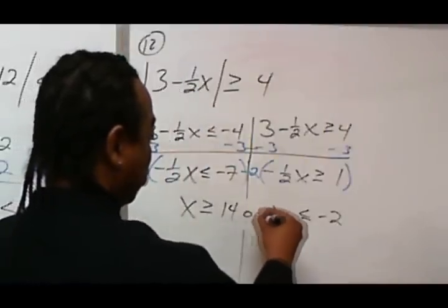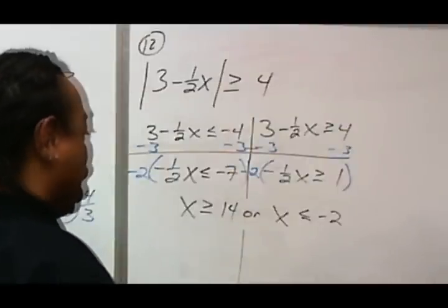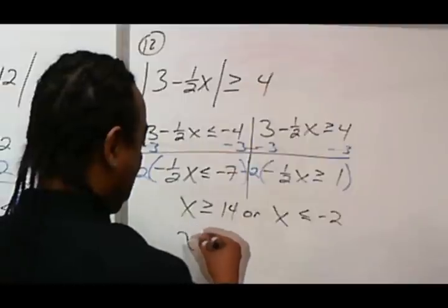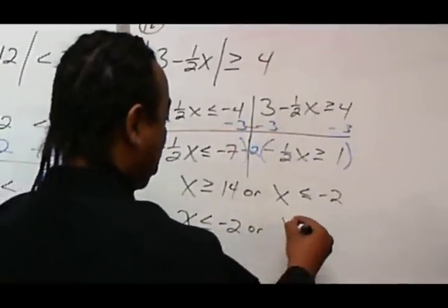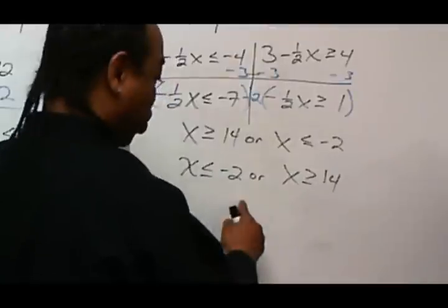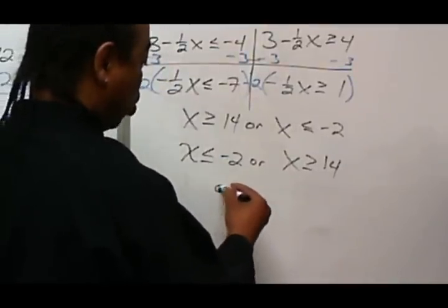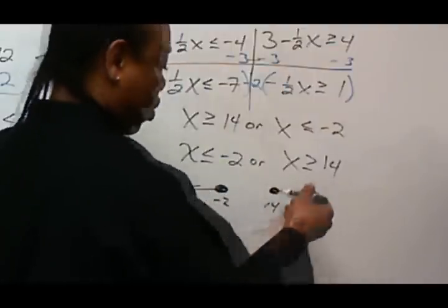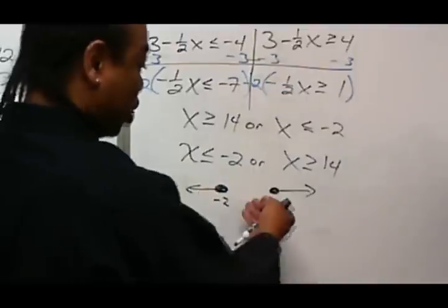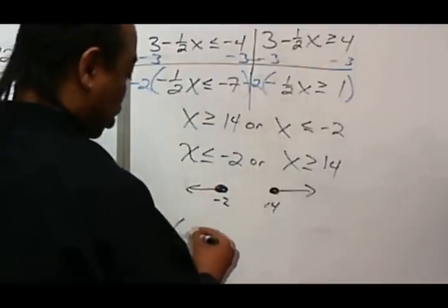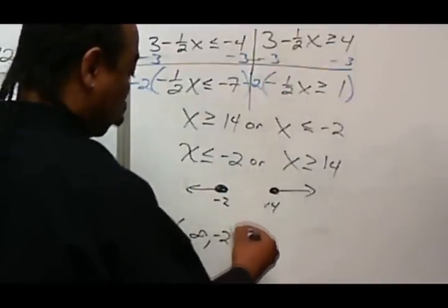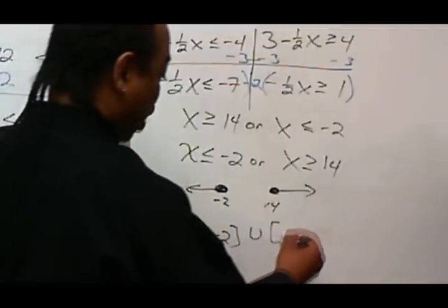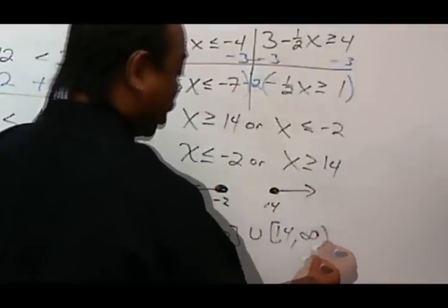That is the solution. I'll write it as: x is less than or equal to negative 2 or x is greater than or equal to 14. As a graph, there's a closed circle at negative 2 going to the left, and a closed circle at 14 going to the right. In interval notation: negative infinity to negative 2 with a bracket, union with a bracket on 14 to positive infinity.